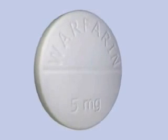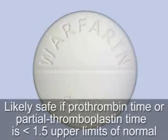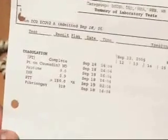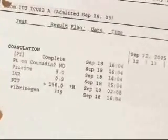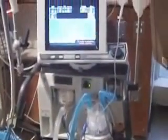Limited data exists regarding the safety of thoracentesis in patients with coagulation abnormalities. The procedure is probably safe in patients with mild or moderate elevations of the prothrombin time or partial thromboplastin time. The decision to use fresh frozen plasma or platelet concentrates in patients with clinically significant coagulopathy or thrombocytopenia must be made on an individual basis. The procedure should be used with care in patients who are receiving mechanical ventilation, since positive pressure ventilation may bring the lung close to the thoracentesis needle and increase the risk of pneumothorax.